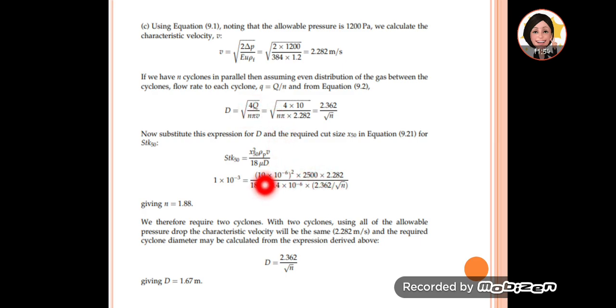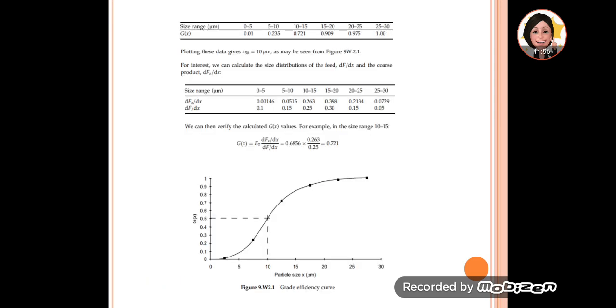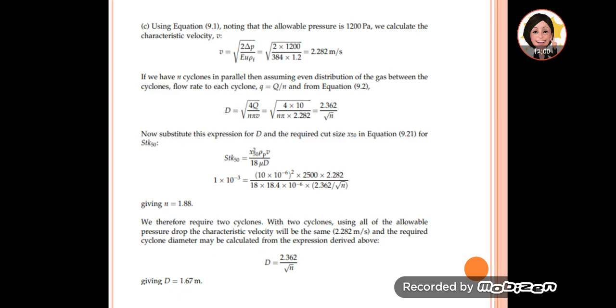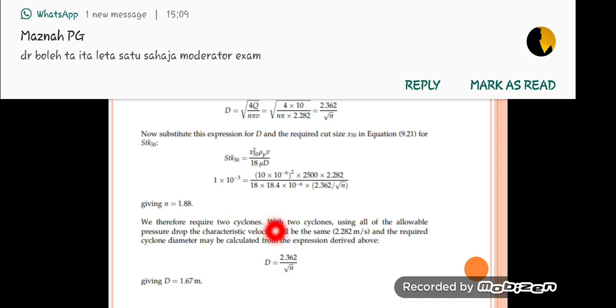The D is substituted here. The required size was 10 micrometer (Stk50). That's why it's 10 micrometer, 10 to the power of -6. This solves for N. We can see it is 1.88, so we need 2 cyclones.